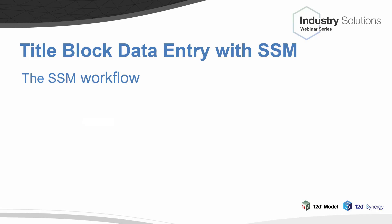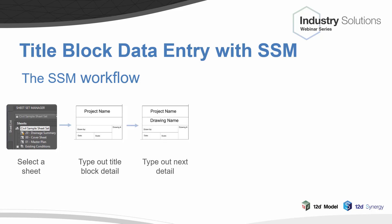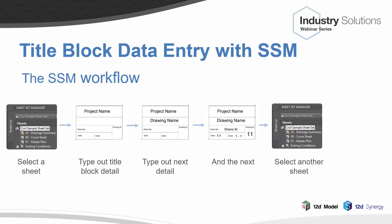The workflow for updating and managing your title blocks with Sheet Set Manager looks like this. First, you select a sheet in your Sheet Set Manager toolbar, then select a title block property and type it out. You select the next one, type it out, and so on. Then you select your next sheet and repeat for however many sheets and DWGs you have. If you have 10, 20, 30, or 50 sheets in a project, you're looking at what could easily be hours of data entry, especially if you're doing multiple attributes in every single sheet.